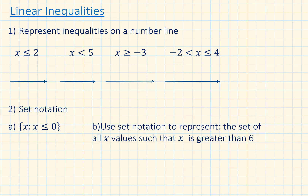x is less than or equal to 2. Because the 2 is included, we will draw a shaded circle. Everything less than 2 is represented by an arrow going towards negative infinity. Let's label this and we are done.